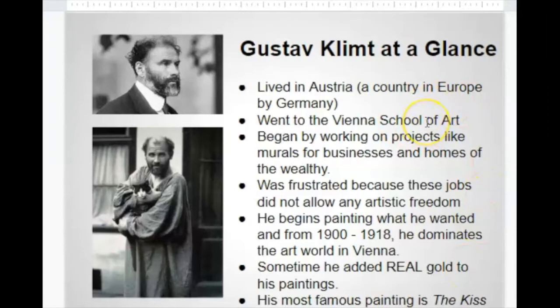He went to the Vienna School of Art. He began by working on projects like murals — painting on the wall — for businesses and homes of the wealthy. But he was frustrated because these jobs didn't allow for any artistic freedom; he had to do what the client wanted. He began painting what he wanted from 1900 to 1918 and he dominated the art world in Vienna.